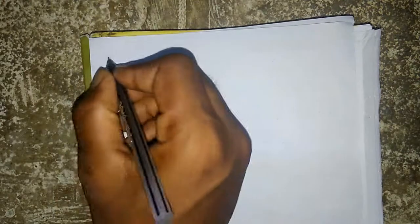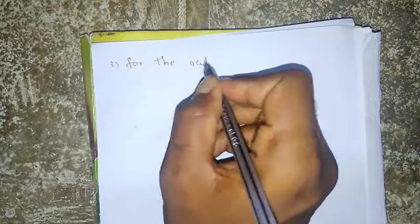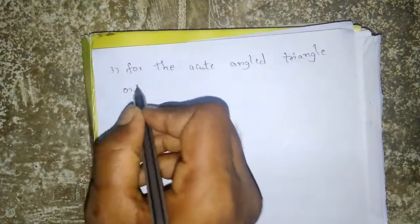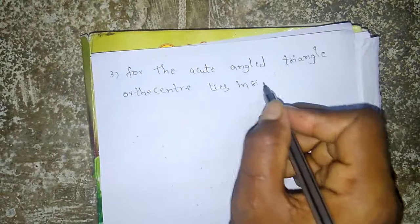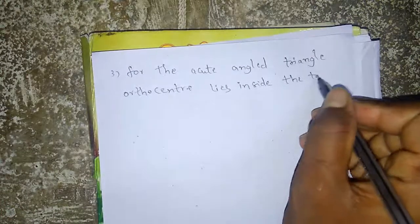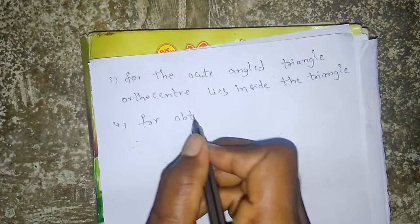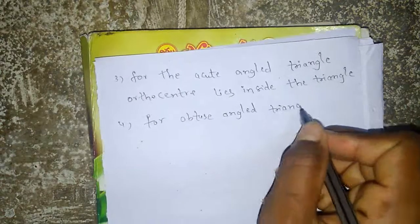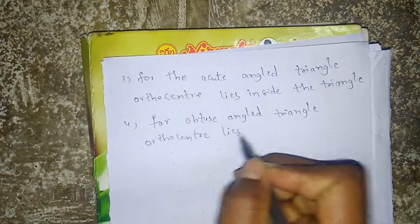For an acute angle triangle, the orthocenter lies inside the triangle. For an obtuse angle triangle, the orthocenter lies outside the triangle.